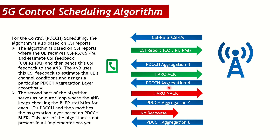If there is a HARQ ACK, meaning the UE was able to decode it, the PDCCH aggregation level does not change — it remains at 4. If there is a HARQ NAK, the UE could not decode the PDSCH, so the PDSCH MCS might be reduced from 16 QAM to QPSK, but the PDCCH aggregation level still does not change — it stays at 4. However, if the UE sends no response at all, the PDCCH aggregation level increases to make it more robust.